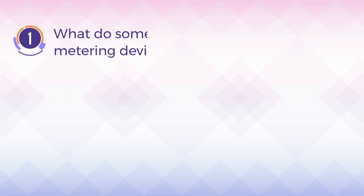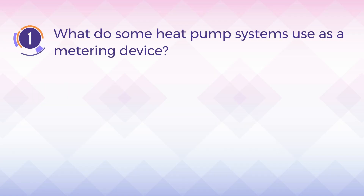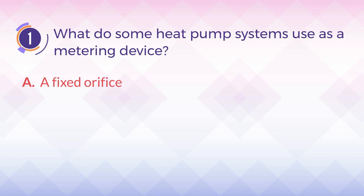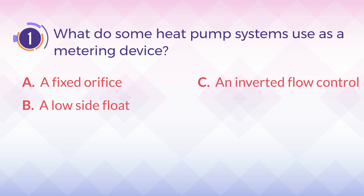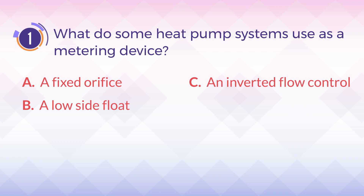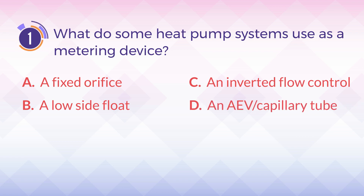Number 1. What do some heat pump systems use as a metering device? A. A fixed orifice. B. A low side float. C. An inverted flow control. D. An AEV or capillary tube.